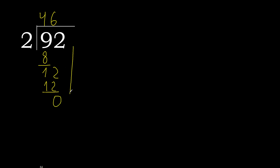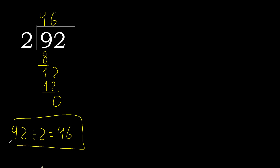There is no remaining number, so we finish. 92 divided by 2 is 46.